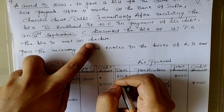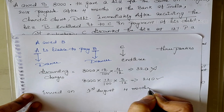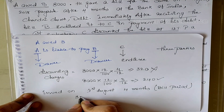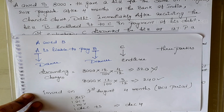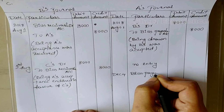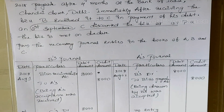The bill is met on due date. Bill was issued on 1st August 2018, bill period is 4 months: 1st September, 1st October, 1st November, 1st December, plus 3 days grace — due date is December 4th. Journal entry in A's books: Bills Payable Account debit to Bank Account. Amount is 8000. A had to pay the bill to B; B endorsed it to C; C discounted the bill and got the amount from bank. So A pays the bill amount to bank — bank is the new payee — hence we credit Bank Account.